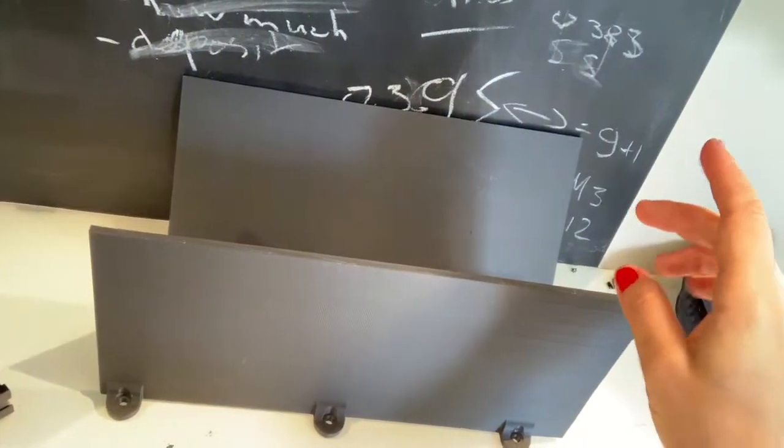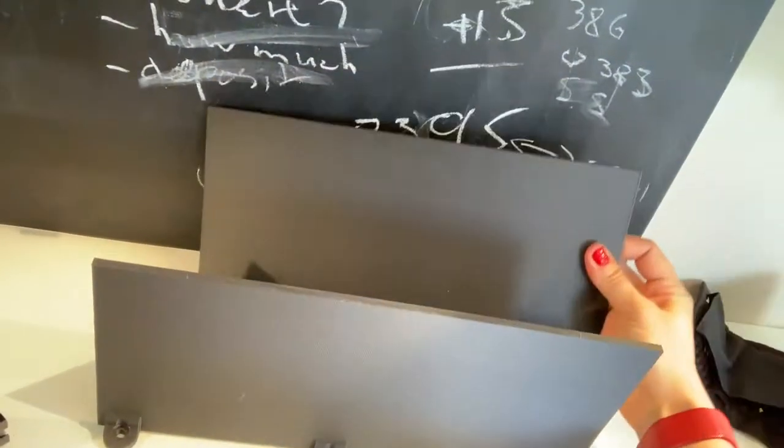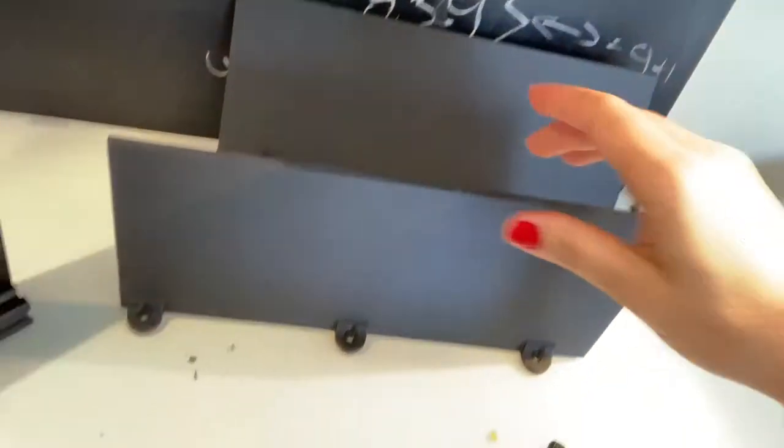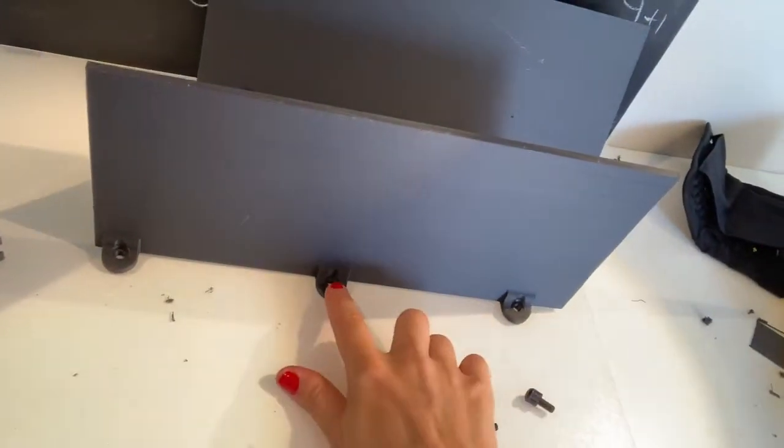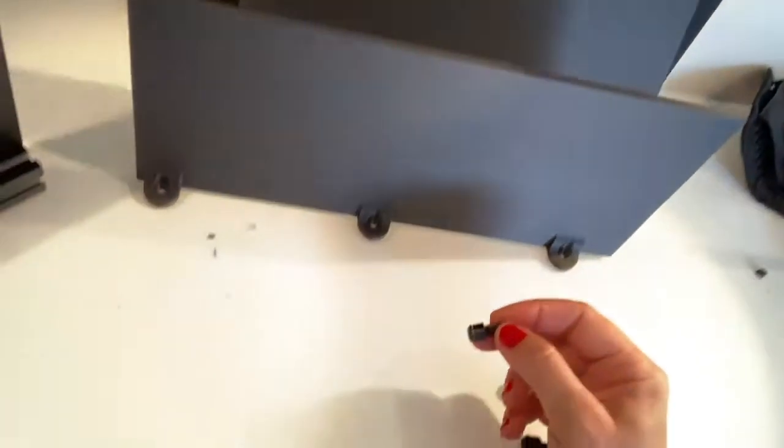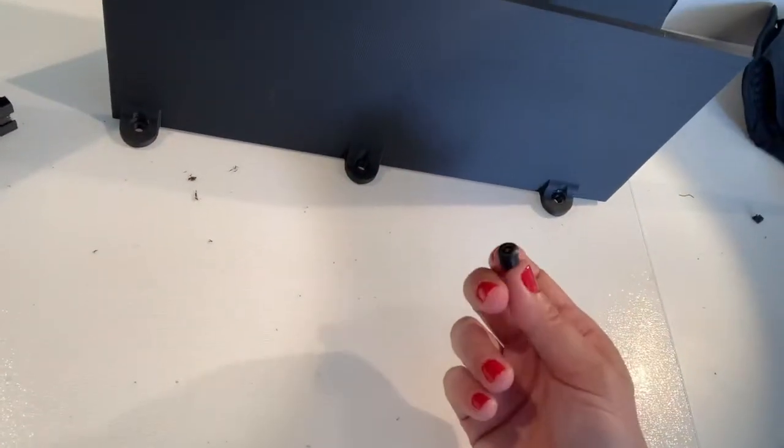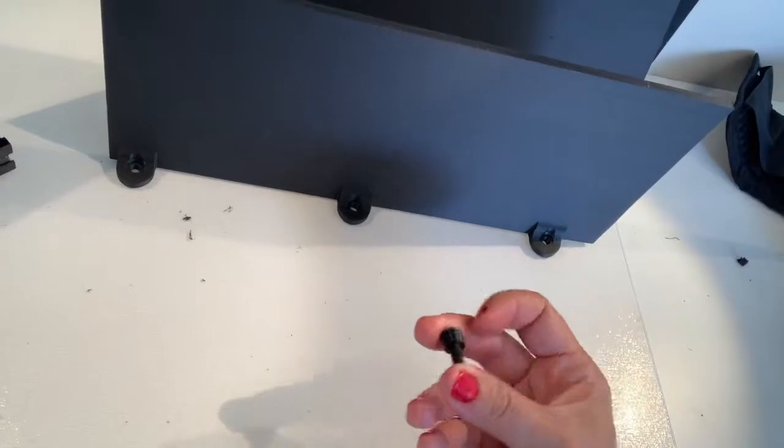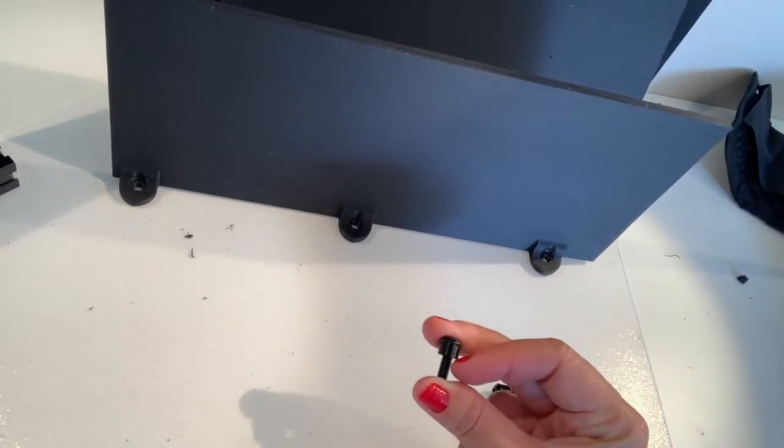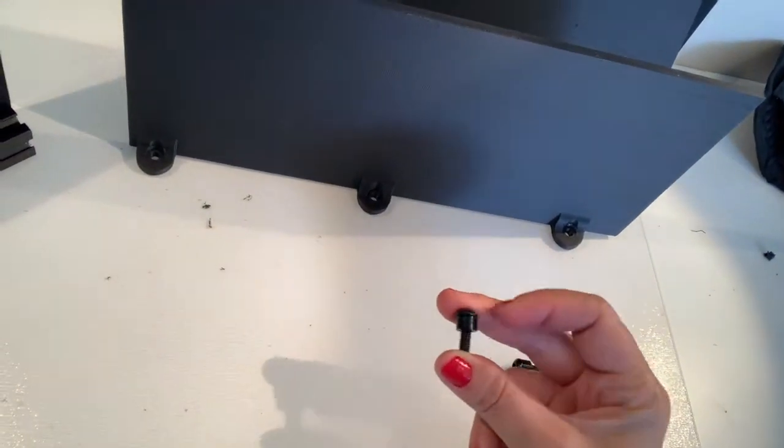It consists of two halves, the left one and the right one, and it should be held by M5 screws that are about 11mm long. I don't have such, so I'm using 16mm long with 5mm long plastic washer that I printed.